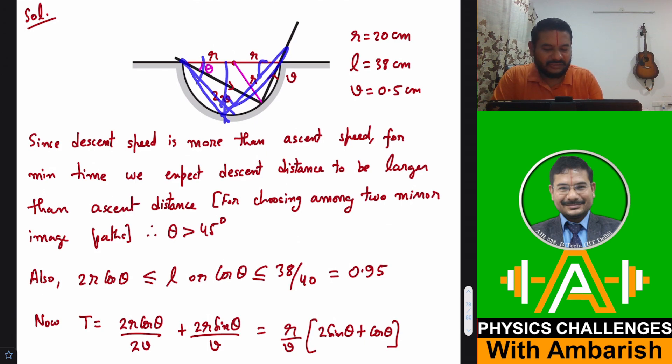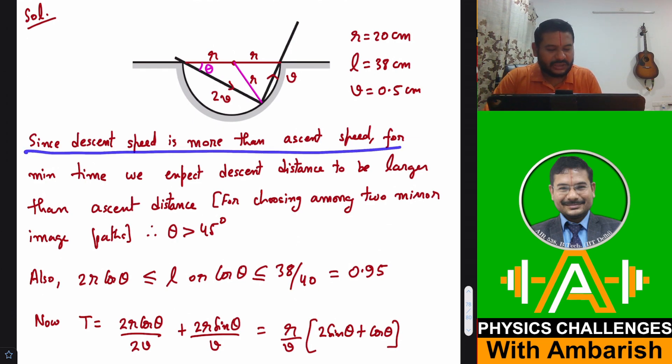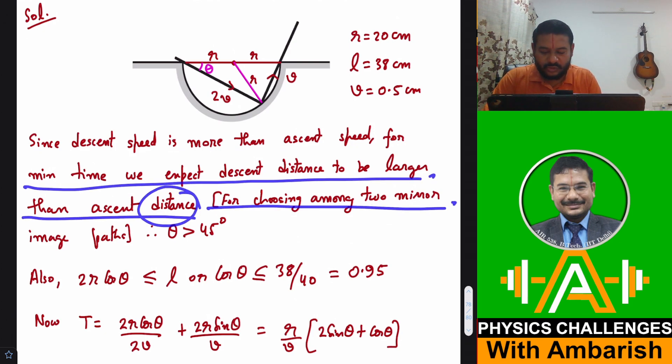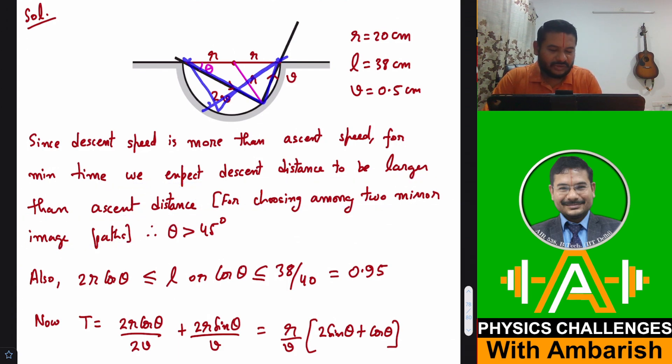So this much is clear that our path should be somewhere over here, that is theta should be less than 45 degrees. Because in the middle, if you take theta, this angle will be 45 degrees and 45 degrees. So one thing we can say for sure that theta must be less than 45 degrees so that descent distance is more than the ascent distance. Since the descent speed is more than the ascent speed, for minimum time we expect descent distance to be larger than the ascent distance.